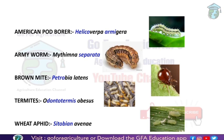Wheat Aphid's scientific name is Sitobion avenae. So let's see the tricks to learn these scientific names. American Pod Borer's scientific name is Helicoverpa armigera.